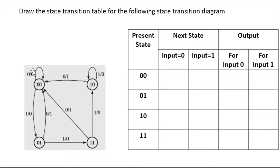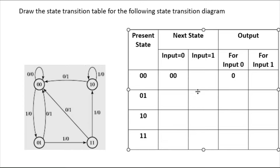State 00 has no transition for input value 0, so the next state will be the same state 00 and the output is 0. For input 1, the first value tells you the next state and the second value tells you the output. So state 00 with input 1 is going to state 01, and the output is 0.